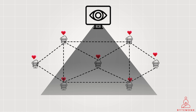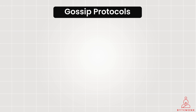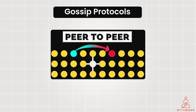Common implementations of heartbeat include simple pings, wherein servers ping each other at regular intervals expecting a response to confirm their aliveness — think of it as a quick knock-knock on the neighbor's door. Gossip protocol is a procedure of computer peer-to-peer communication. In gossip protocols, servers share heartbeat information with their immediate neighbors, who then propagate it further, ensuring everyone stays informed.